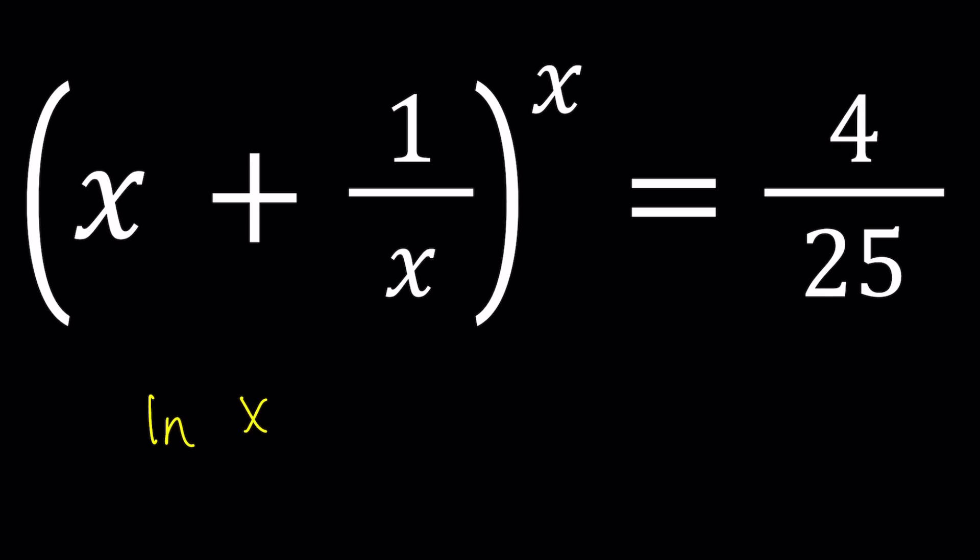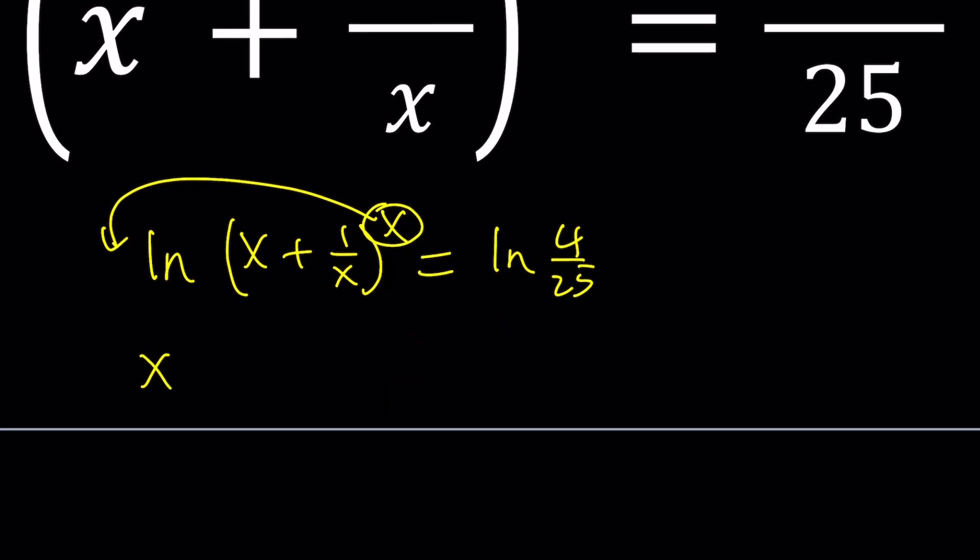Now if we take the ln of both sides, we're going to be able to bring the x down. So we can write it as a coefficient: x times ln of x plus 1 over x equals ln of 4 over 25.